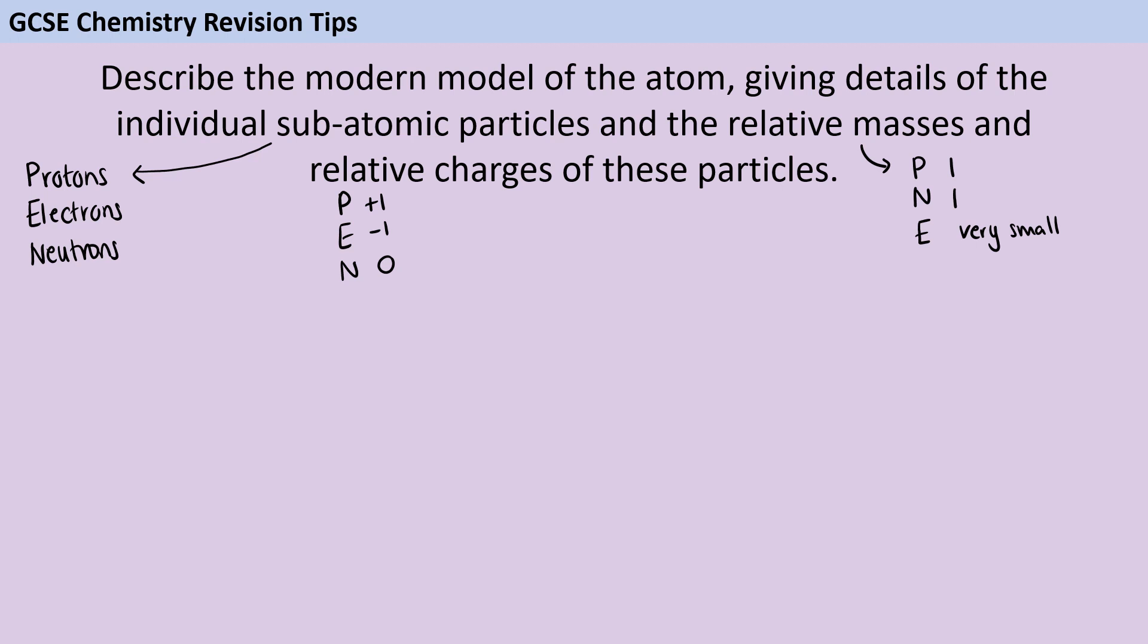So then we're ready to start writing a description of what this atom actually looks like and where these particles are found. I'd start out by saying that an atom consists of a small dense nucleus and that that nucleus contains the protons and the neutrons.